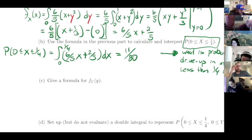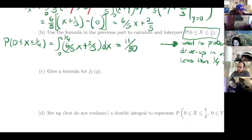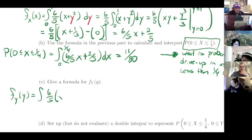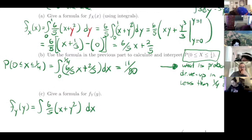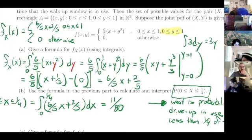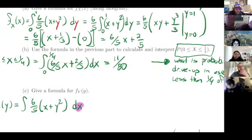For the marginal distribution of Y, I'll leave that as practice. The process is the same: integrate the joint PDF with respect to x, using the x limits, treating y² as a constant. The result should be f_Y(y) = 3/5 + (6/5)y².